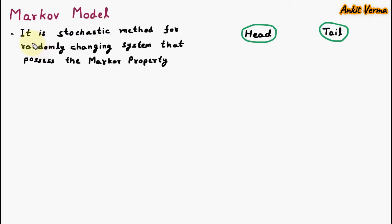Hello everyone, my name is Ankit Wama and today we are learning Markov Model. The definition of Markov Model says it is a Stochastic Method for Randomly Changing System that possesses the Markov Property. Stochastic means which contains random variables. So it contains random variables for a system which is randomly changing and that possesses the Markov Property.